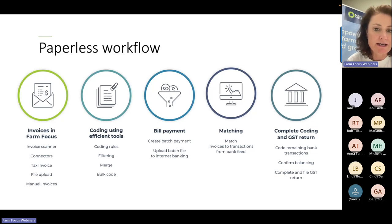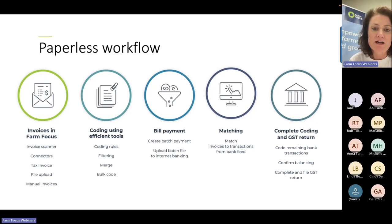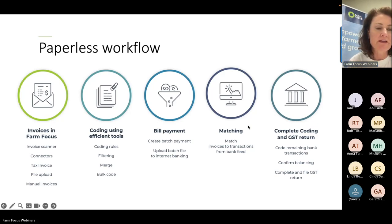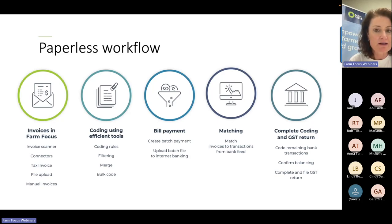Now your money has physically come in or out of your bank account. Because you've got bank feeds set up, the transactions are automatically going to appear in Farm Focus. All you need to do is simply match those transactions. The final step is completing the coding and filing your GST return. Any remaining bank transactions need to be coded, and we make that practice efficient by the use of coding rules.